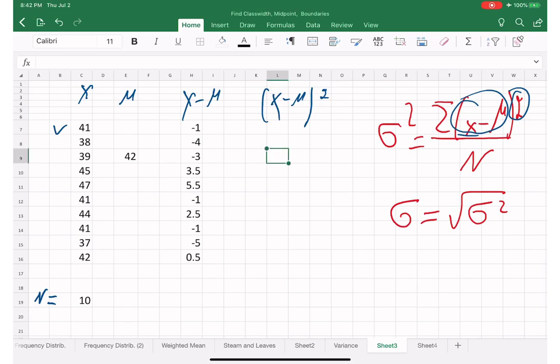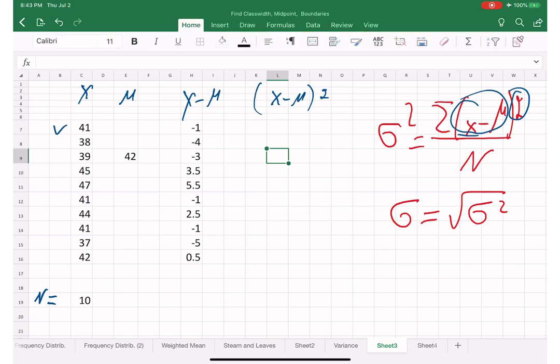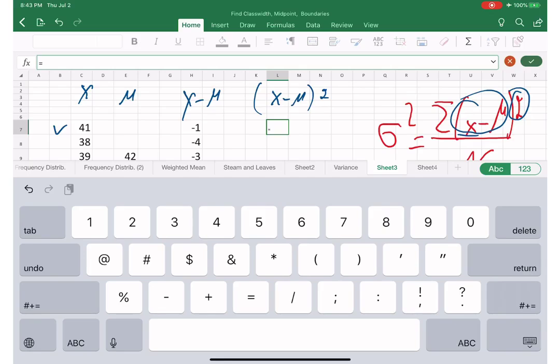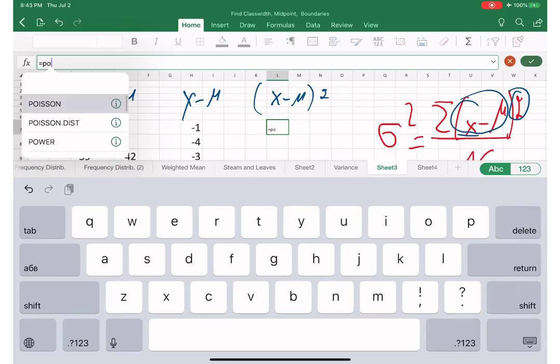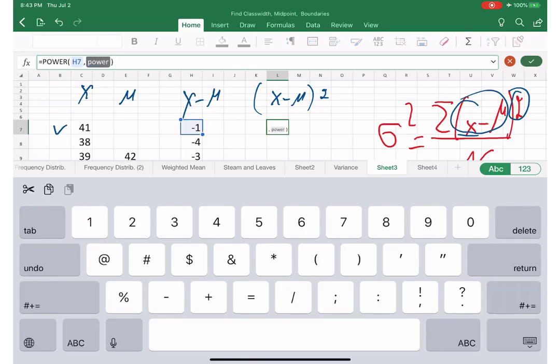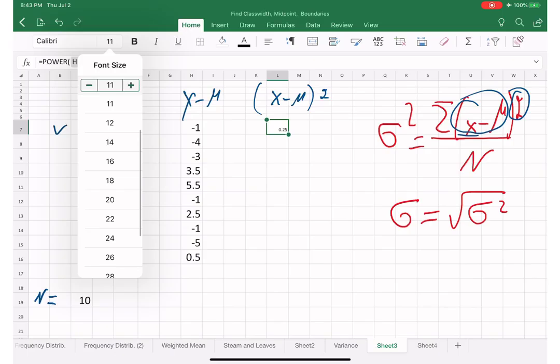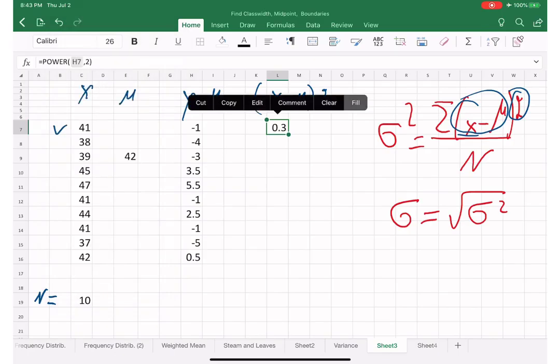So now here we are going to raise to power 2. To raise to power 2, we need to use power. There we go, power. And it's going to be this number powering this one. And the second power, we are going to put which degree? 2, right? Because we want to take square. That's why we put 2. So let me fix it. It's supposed to be 26. Fill it in. There we go, we have it.